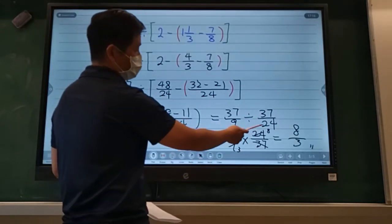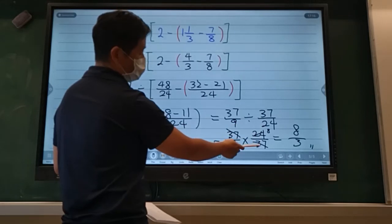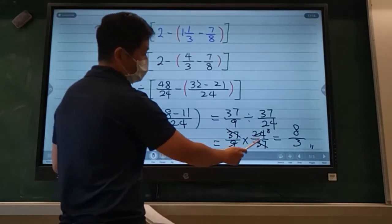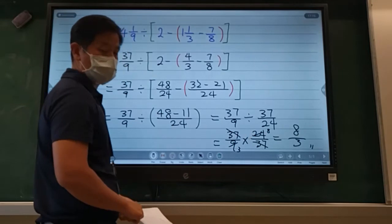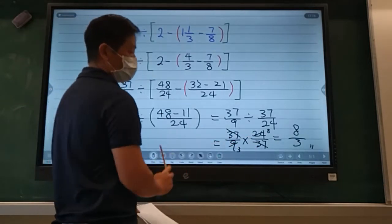So flip it over, it becomes 24 over 37. And once we have that, we can see 37 is 37 on both sides. One is on the bottom, one is on the top.